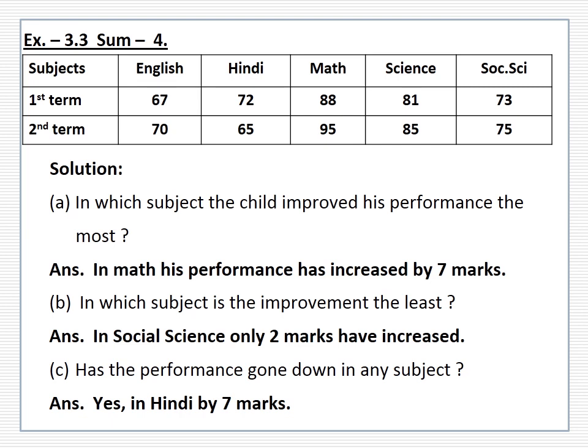The last question is: has the performance gone down in any subject? Yes. In first term in Hindi he scored 72 marks, but in second term he scored only 65. So he scored less marks in the second term. In Hindi, his performance has gone down by 7 marks. All of you understood how to draw the graph and how to answer the questions based on this graph.